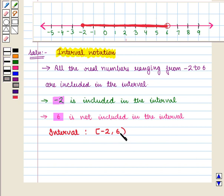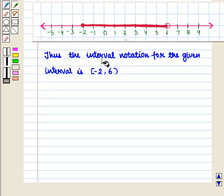We know that in this notation the endpoints are always written from left to right. That is, the smaller number is written first, followed by comma, and then the larger number. Thus the interval notation for the interval is semi-closed interval from minus 2 to 6.